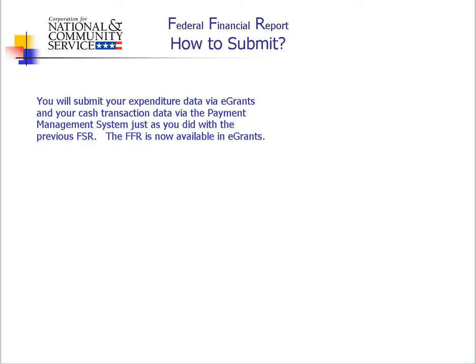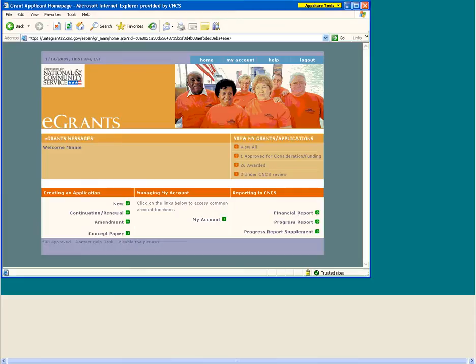Although the actual FFR report will not look the same as the financial status report, the corporation has tried to keep the design of the FFR screens as close to the financial status report screens as possible. You will access the FFR in eGrants the same way you access the financial status report. eGrants will continue to display previously entered amounts and continue to calculate totals and percentages. The new FFR screens are now available in eGrants. Please note that you should continue to submit your cash transaction report the same as always. The Payment Management System plans on implementing their new form by October 1, 2009. Now we're going to move right into eGrants and begin reviewing each field.